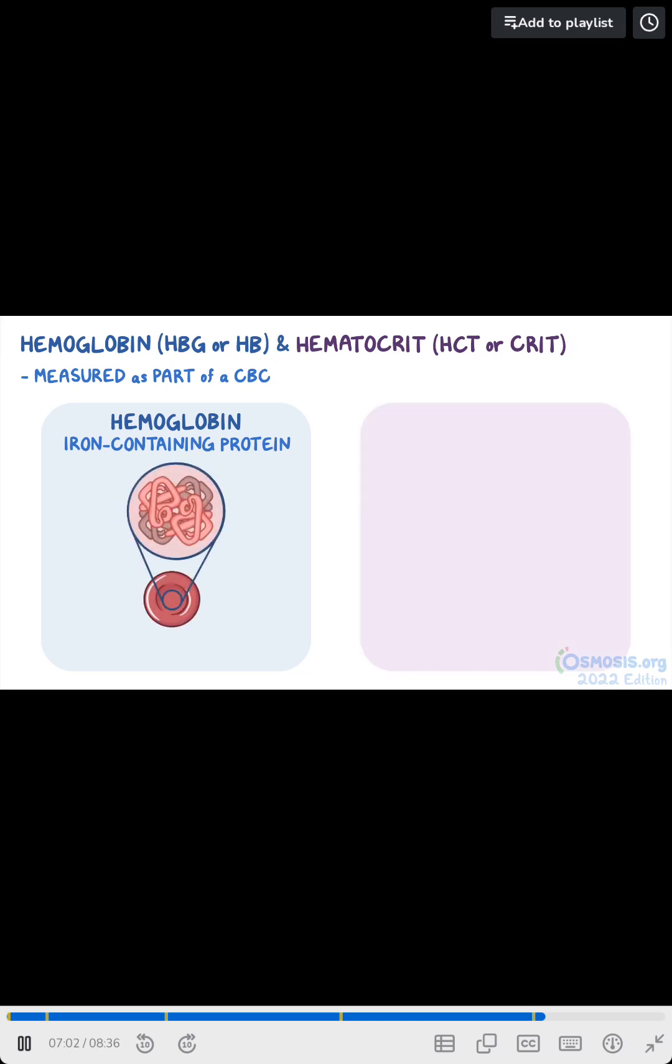As a quick recap, hemoglobin and hematocrit are part of a CBC. Hemoglobin is an iron-containing protein found in RBCs, while hematocrit is a percentage of RBCs in the blood.